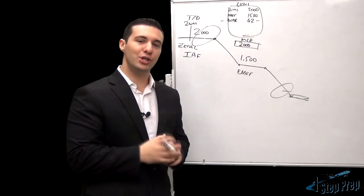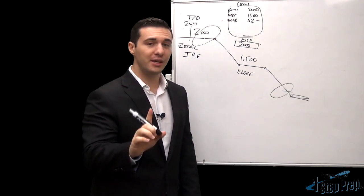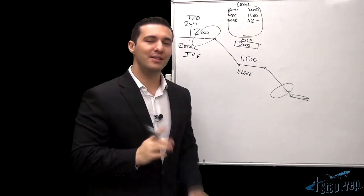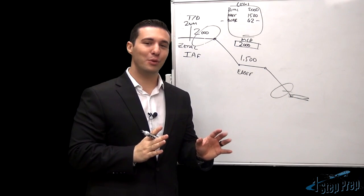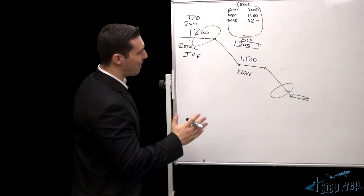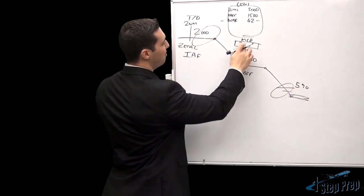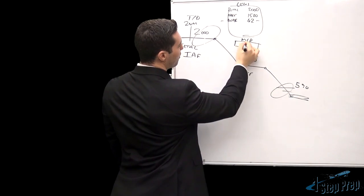Now the MDA on this particular approach, localizer glide slope out of service, happens to be 540 plus we're going to add 50 feet to the MDA. Remember MDA stands for not only minimum descent altitude but also must-do arithmetic. So you got to add 50 feet to this, so 540 plus 50 is going to bring you to 590 and the MCP of course cannot set 590 so we will round to 600 feet.